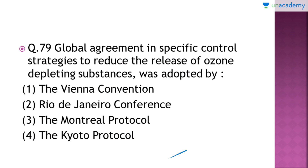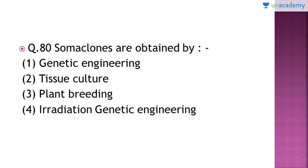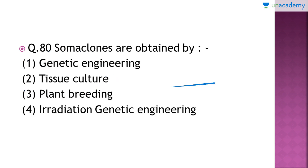Moving on to question number 80: 'Somaclones are obtained by which of the following?' The right answer is option number 2 — tissue culture. Somaclones are plants produced by tissue culture that are genetically identical. You take tissue from the mother plant, grow it in tissue culture separately, and the two plants will have the same characteristics and same genetic constitution — these are called somaclones.